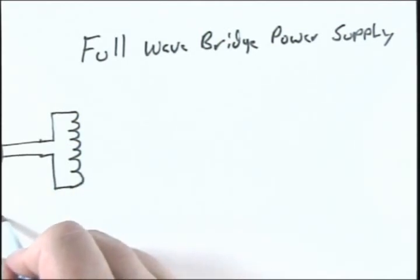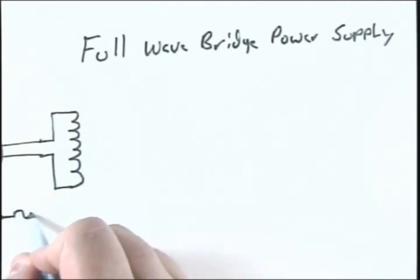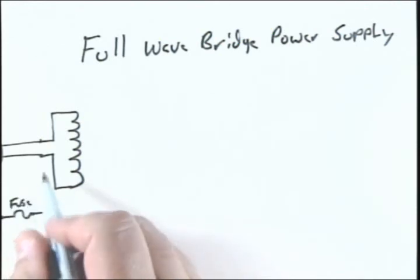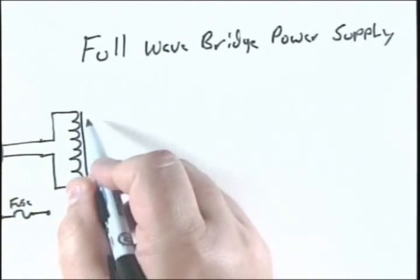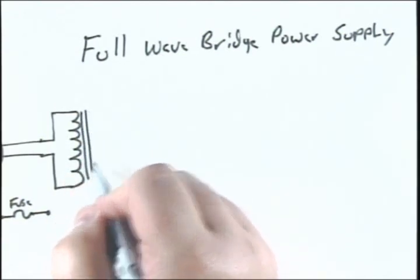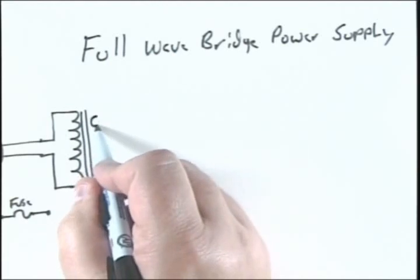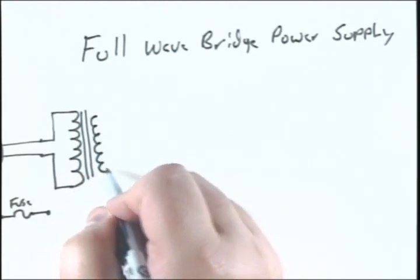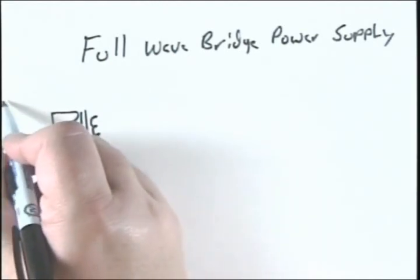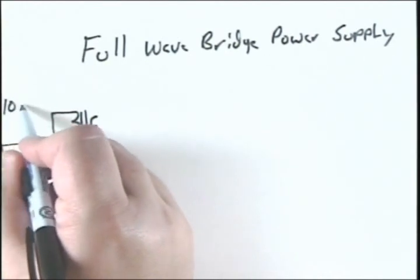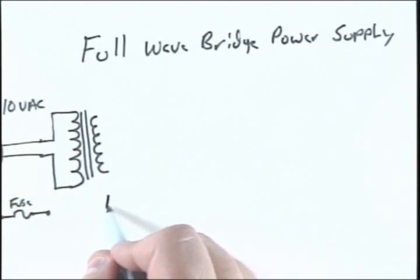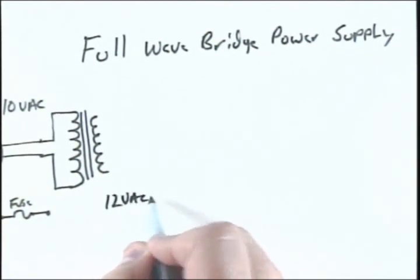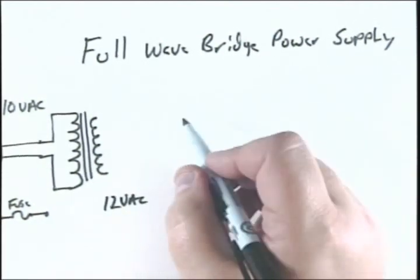Sometimes we'd put this device in the circuit, and that would be a fuse. It could go anywhere in this part here. This is an iron core transformer. This again is 110 volts, and this is 12 volts coming out.